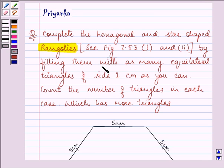by filling them with as many equilateral triangles of side 1 cm as you can. Count the number of triangles in each case and answer which has more triangles.